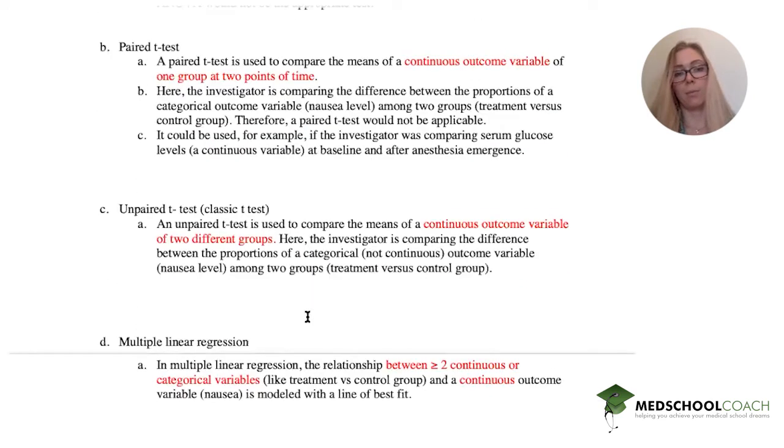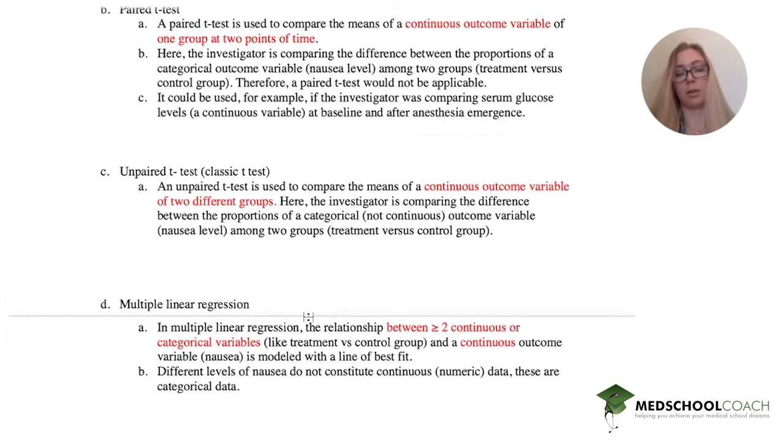And then multiple linear regression. You're looking at the relationship between more than two continuous or categorical variables. So that's already an option that we could use. And then a continuous outcome variable, which is then modeled on a line of best fit. So because different levels of nausea do not constitute continuous data, we can't really use a multiple linear regression.